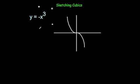Likewise, whenever it's minus x cubed, it's going to be the other way around because you cube the number and then make it negative. A positive times a positive times a positive is a positive, but then we make it negative, so it's going to get very low very quickly. And a negative times a negative times a negative is a negative, but then we times it by minus one, so it becomes positive. So we'll have this overall shape.